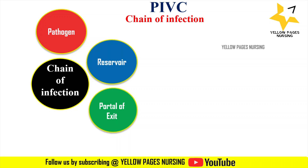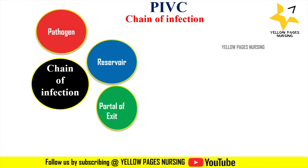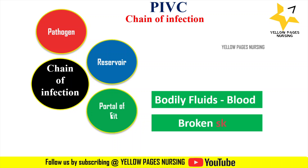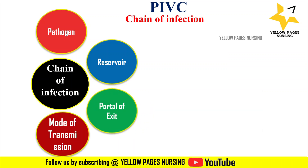Next comes portal of exit. In the chain of infection, this refers to the route by which the infectious microorganisms escape or leave the reservoir. Here, the portal of exit is through bodily fluids — that is blood — and broken skin.